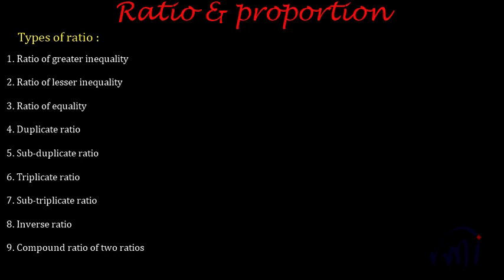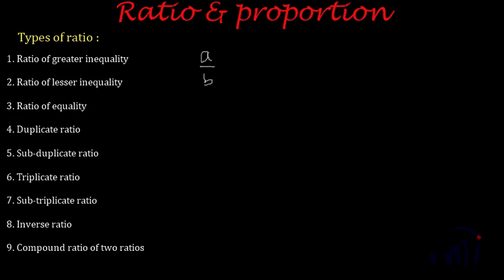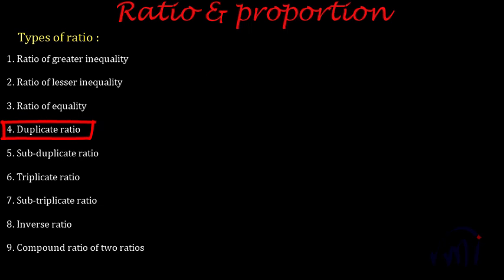Now let's go to the next type: the ratio of equality. Any ratio A is to B is called the ratio of equality if A is equal to B. This is very simple.